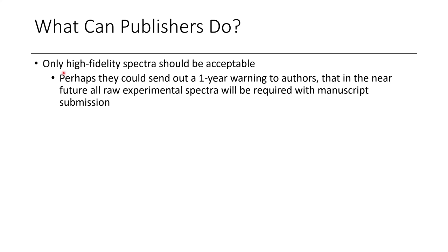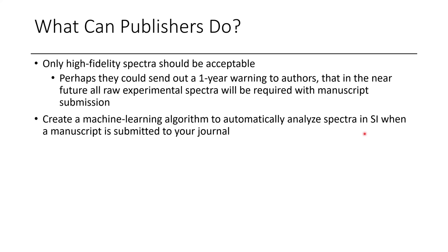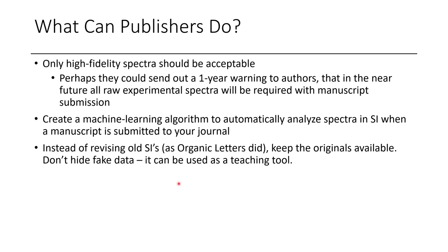Here's a blog post that talks about this paper. What can publishers do? Only high-fidelity spectra should be acceptable. If someone has old spectra, get them to retrieve the original data from the NMR computer — we're usually not trying to get rid of data, and it's rare you can't just get another hard drive. One way journals can phase this in is to give a warning that high-fidelity spectra will be required starting in a year or two. Then new spectra can be recorded properly, or better yet, keep all the raw experimental data. If journals create a machine learning algorithm that automatically analyzes spectra for these issues, they can check every submission reliably without requiring extra manual effort.